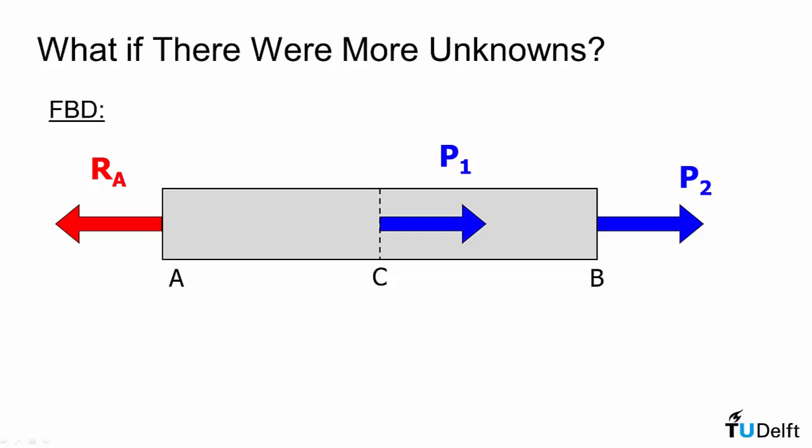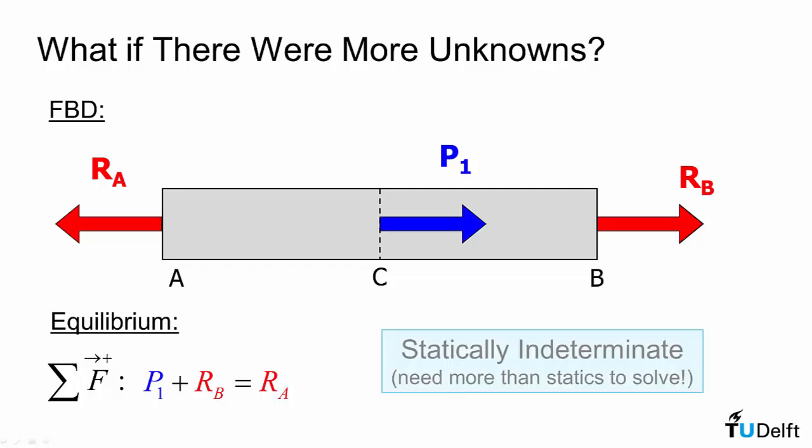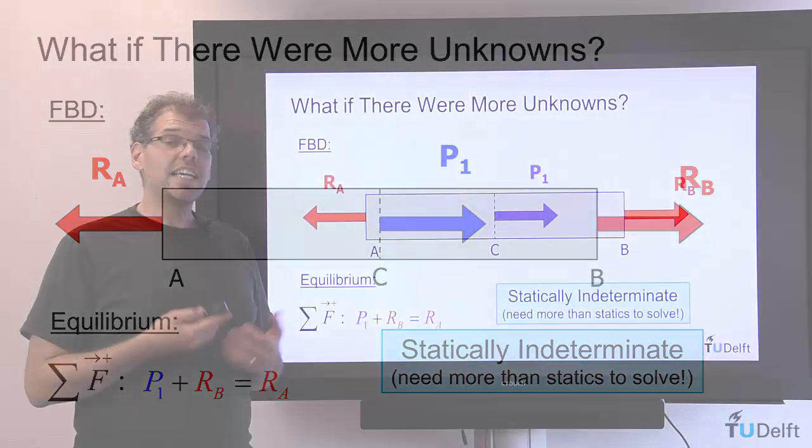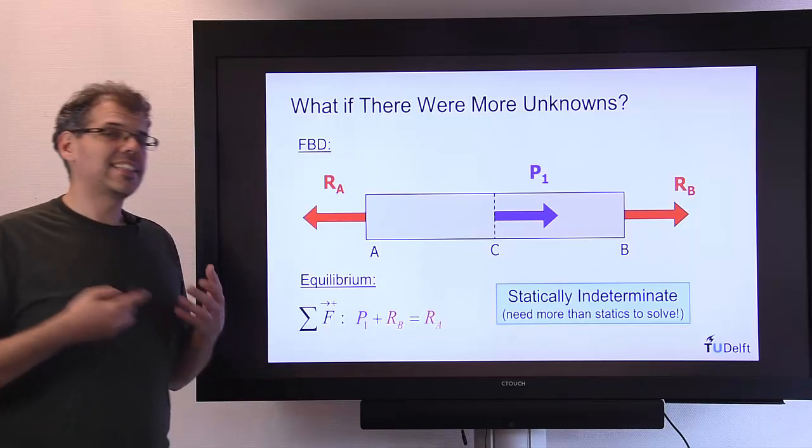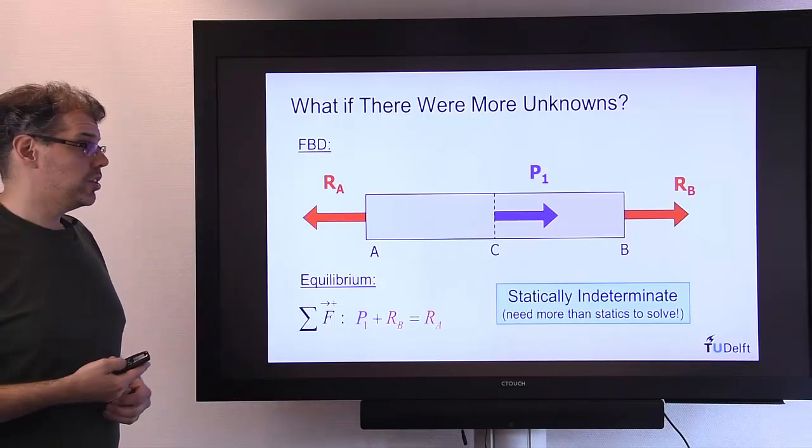What if there were more unknowns though? What if we replaced our known force P2 with an unknown reaction RB? Our equilibrium then would result in one equation and two unknowns and we would not be able to solve the problem using statics alone. Thus the problem would be called statically indeterminate. We need something in addition to statics in order to solve that.